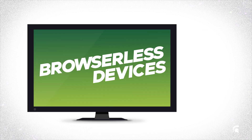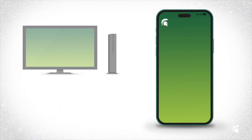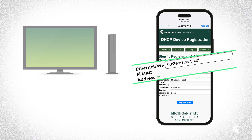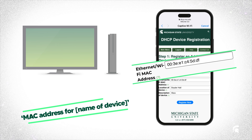like your smart TV or gaming system. For those, you'll need to use your laptop or mobile device that's already been registered and go to dhcp.msu.edu. The process is pretty much the same as what we just went through, except you'll need to find and enter the device's MAC address. If you can't find the MAC address, just search the internet for MAC address and the name of the device.